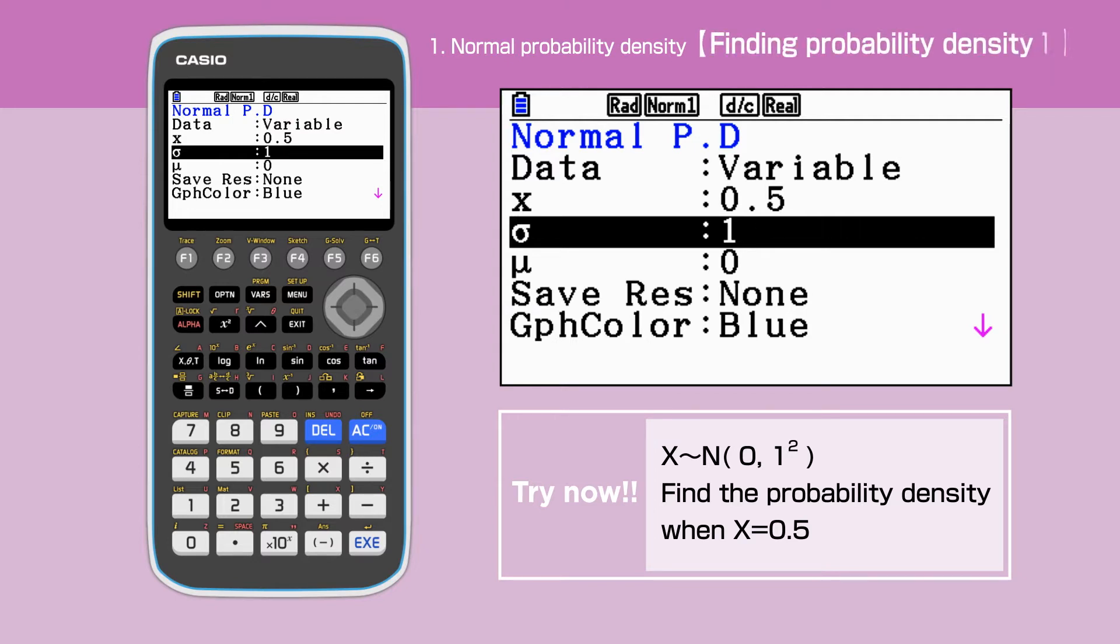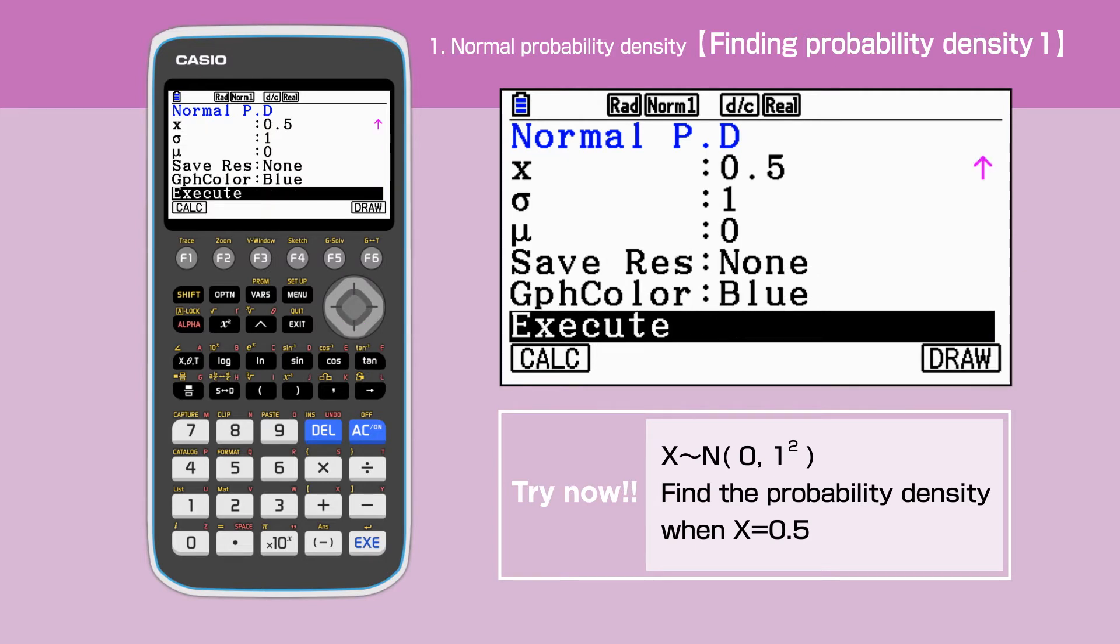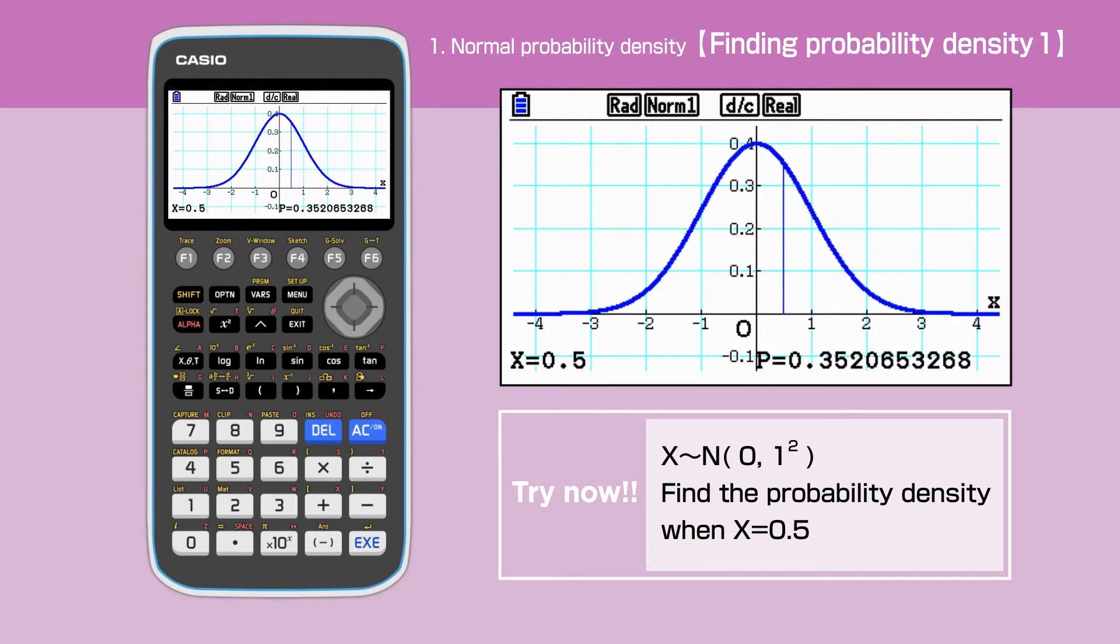We will draw the graph and calculate the value for x now. Scroll down the screen. Highlight Execute and press F6 to draw the graph. The normal distribution is drawn and the probability density is calculated to be 0.352.